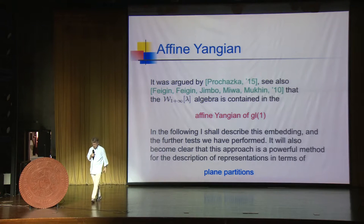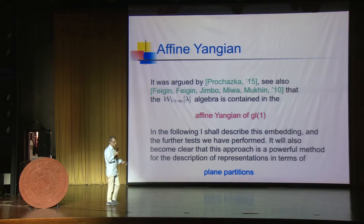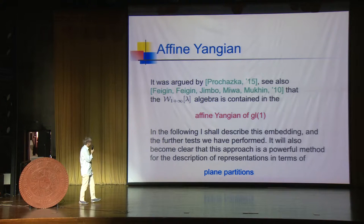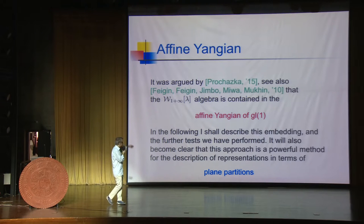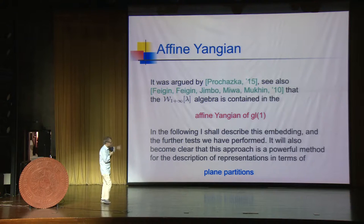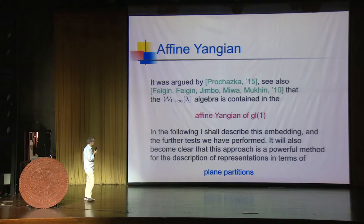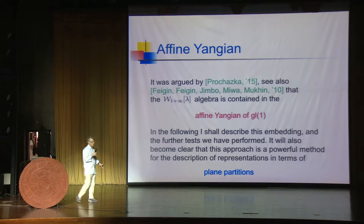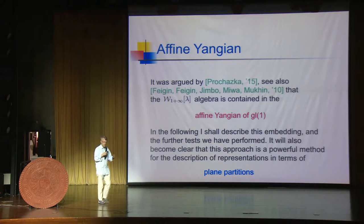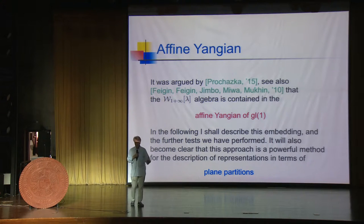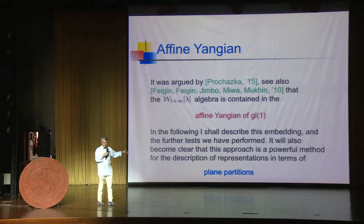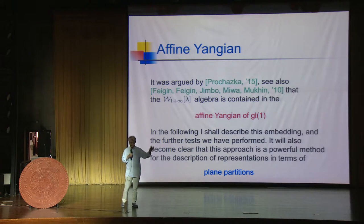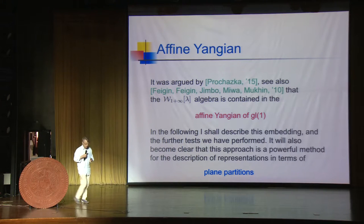The paper I was alluding to at the beginning is the paper by Tomasz Prochazka that appeared in December 2015. He observed, using previous results, that this W_{1+∞}(λ) algebra is actually contained in a specific Yangian algebra — namely the affine Yangian of GL(1). What I want to explain is how this embedding works and the additional tests we have performed, and it will become clear that this is a very powerful technique for describing the representations of the W-infinity algebra, because representations of W-infinity algebras will be labeled by plane partitions, giving a neat geometric way of understanding their characters.